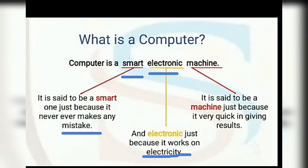Now the third question is: why is it called a machine? It is said to be a machine because it gives quick results. Whatever question we give to the computer, it gives results within a second. That is why it is known as a machine.